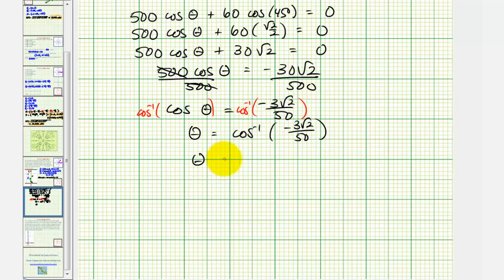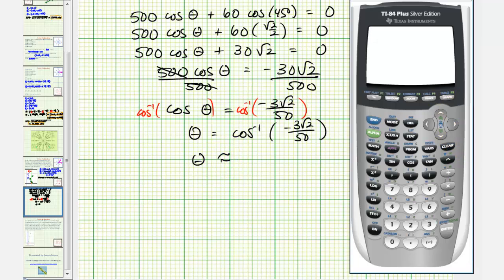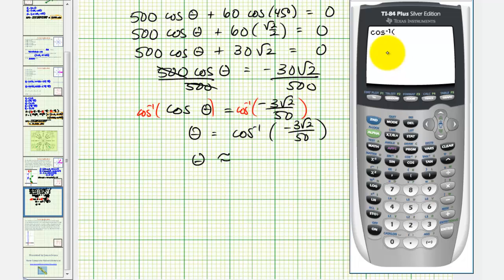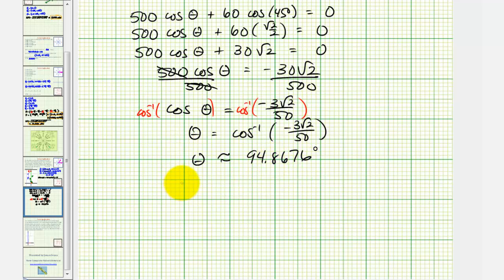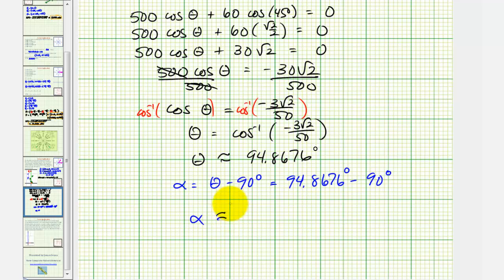Now we'll go to the calculator to approximate theta. Let's verify we are in degree mode — press the mode key, we are in degree mode. Go back to the home screen. Second cosine for inverse cosine, then negative three square root two, right arrow, divided by 50, close parenthesis, enter. Theta is approximately 94.8676 degrees. But we're looking for alpha, where alpha equals theta minus 90 degrees, so 94.8676 minus 90 degrees — alpha is approximately 4.8676 degrees.